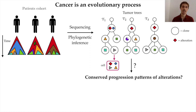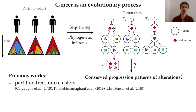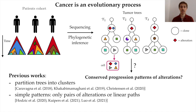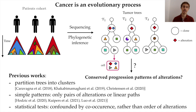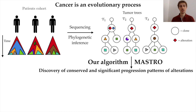However, a critical challenge is to understand if there are conserved progression patterns of alterations shared by many patients — a problem that cannot be addressed by considering each tumor tree individually. Previous works either focused on partitioning trees into clusters according to their similarity, or on finding simple progression patterns such as pairs of alterations with a given order or linear paths. Moreover, the available statistical tests for these patterns can be confounded by the co-occurrence of alterations, without properly assessing significance. Therefore, these methods do not allow discovery of complex progression patterns that are typically important for cancer.